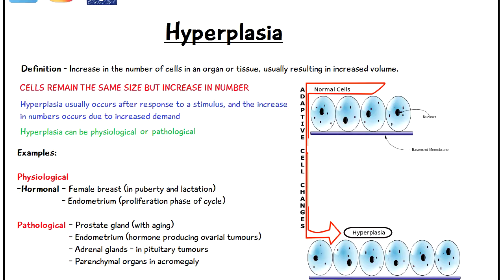Hyperplasia is due to some form of stimulus — either an increase in demand, some kind of hormonal change, or some kind of tumor — which results in these cells growing in number to meet a certain demand. The important thing to understand is the cells remain the same size but they increase in number. It occurs often in response to a stimulus, and the increase in numbers occurs due to an increased demand.